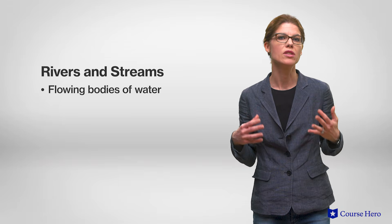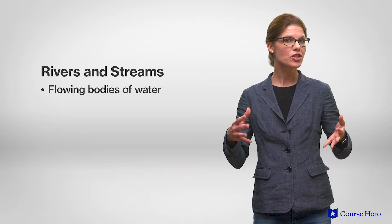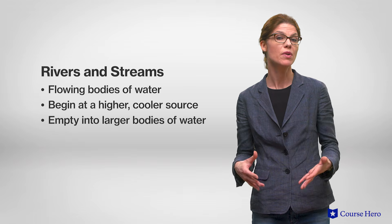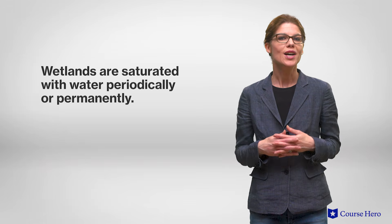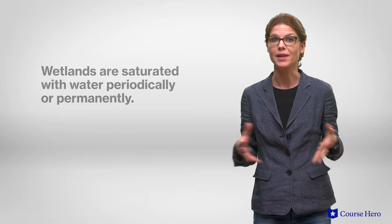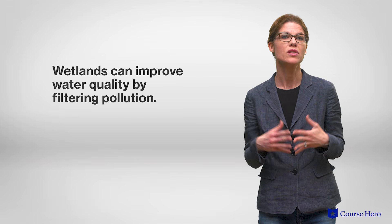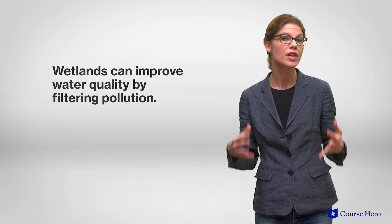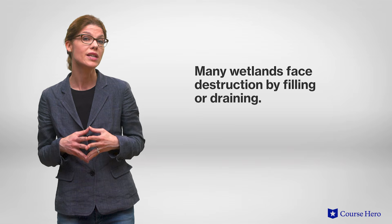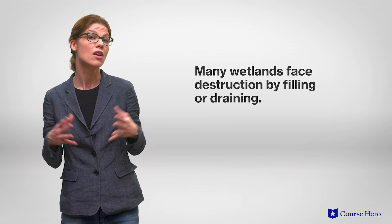Rivers and streams are part of the freshwater biome. They are defined as flowing bodies of freshwater. They usually begin at a source in higher, cooler climates than their mouths, which is where they empty into large bodies of water, such as oceans. Wetlands are areas that are completely saturated with water, either periodically or permanently. Wetlands are ecologically important because of their ability to improve water quality by filtering pollution from water. Wetlands are teeming with photosynthetic organisms and have high productivity. Unfortunately, wetlands face destruction mainly due to human activity, such as the draining and filling of wetlands for urban development.